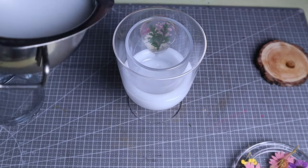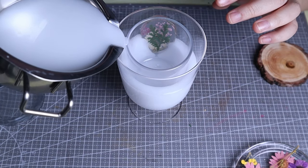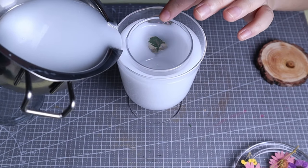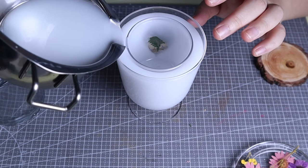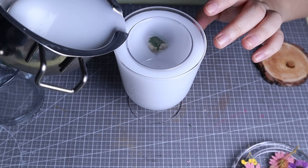Once fixed, reheat the gel wax again and pour it into the glass at 100 degrees Celsius. If it's winter and the room temperature is low, the pouring temperature needs to be increased to 110 degrees Celsius.